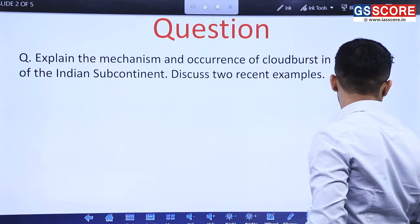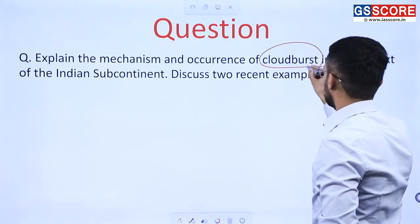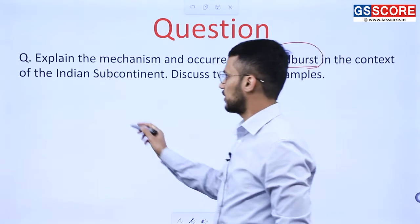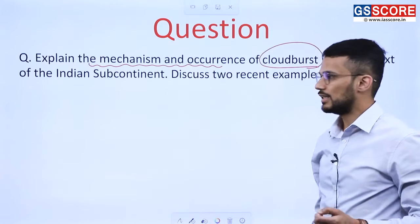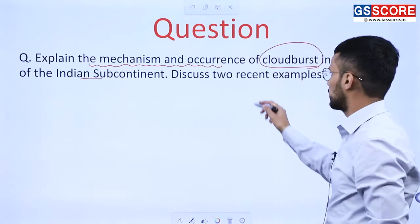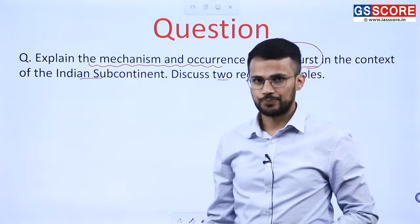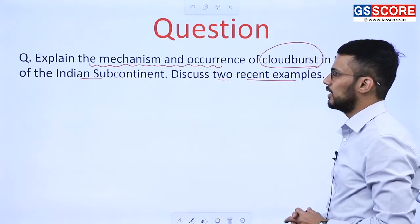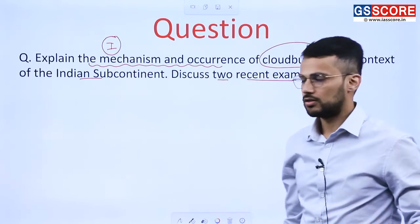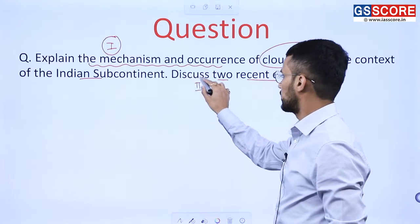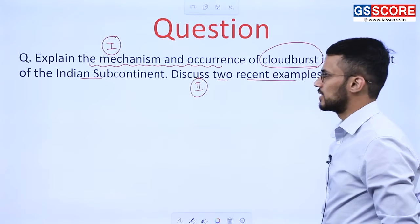The question is: explain the mechanism and occurrence of cloudburst in the context of the Indian subcontinent. We are also supposed to highlight two recent examples of instances of cloudburst. So there are clearly two parts to the question: first, highlight the mechanism and occurrence of cloudburst, and second, give two examples of cloudburst. This question was for 10 marks in the 2022 mains examination.